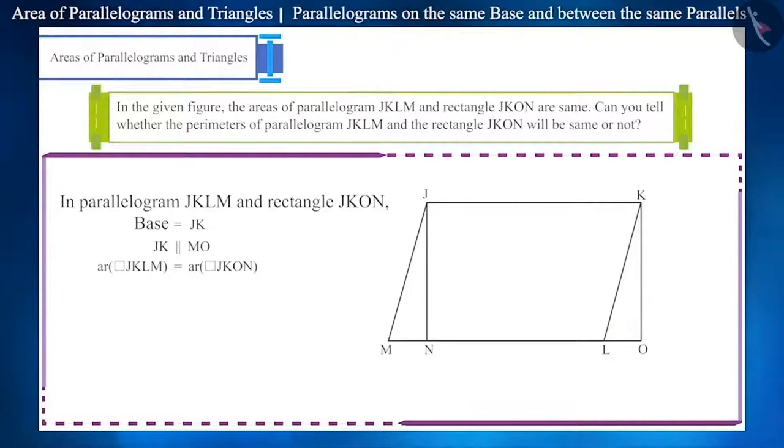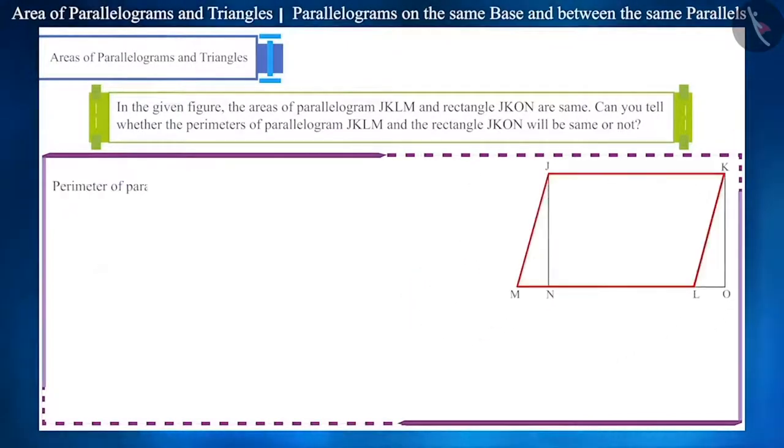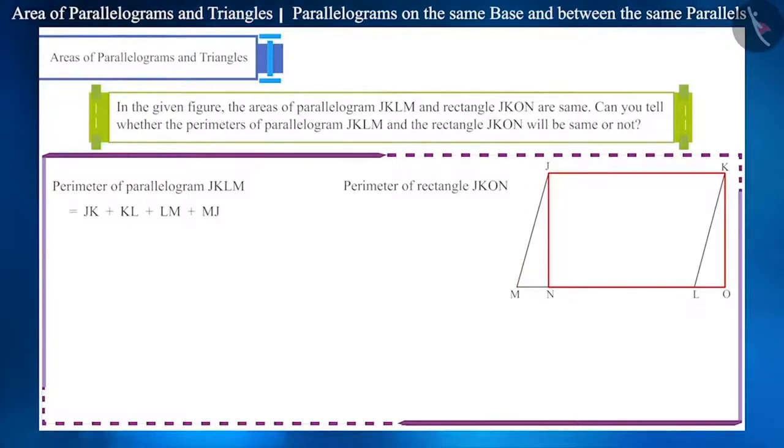But can we say the same for their perimeter as well? Let us write the perimeters of both quadrilaterals. The perimeter of parallelogram JKLM is the sum of the lengths of all sides JK plus KL plus LM plus MJ, and the perimeter of rectangle JKON is JK plus KO plus ON plus NJ.